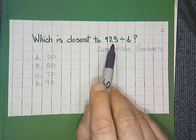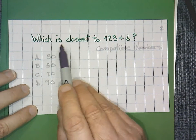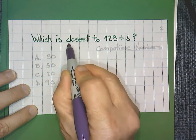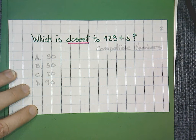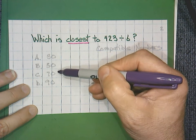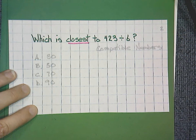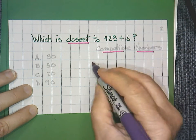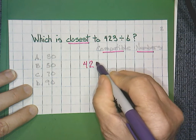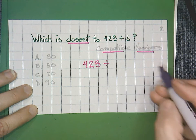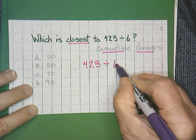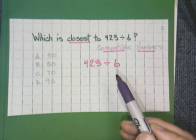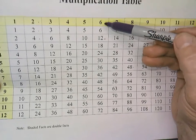This problem is directly from a SOL test that's been released, which is closest to 423 divided by 6. The word closest probably means we need to estimate, and I also see that our answers all have zeros. Those are two clues that this is an estimating problem. When we estimate division, we use something called compatible numbers. I rewrite this problem. 423 divided by 6. I'm looking for a compatible number of 6, and you'll notice that when I look on my chart, here's the 6,